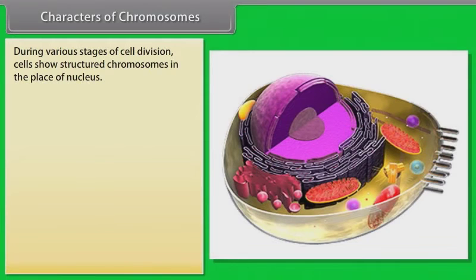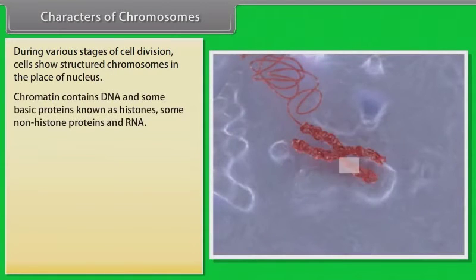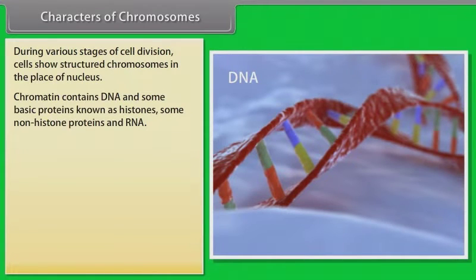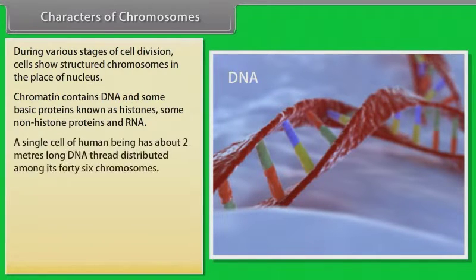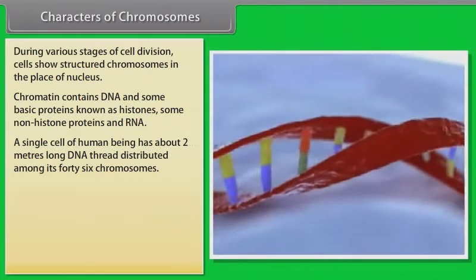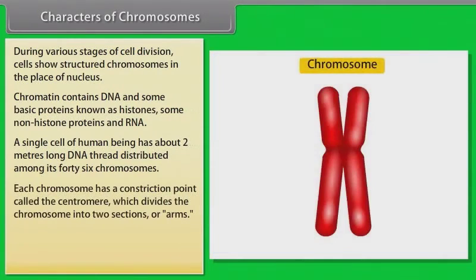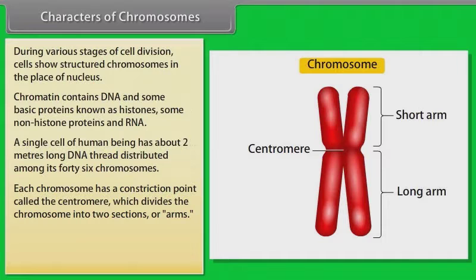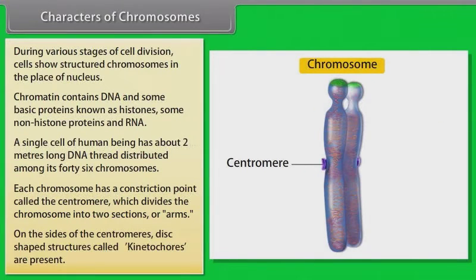Characters of chromosomes: During various stages of cell division, cells show structured chromosomes in place of the nucleus. Chromatin contains DNA, some basic proteins known as histones, some non-histone proteins, and RNA. A single human cell has about 2 meters of DNA thread distributed among its 46 chromosomes. Each chromosome has a constriction point called the centromere, which divides the chromosome into two arms. On the sides of the centromere, disc-shaped structures called kinetochores are present.